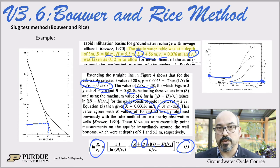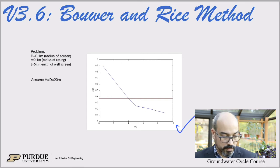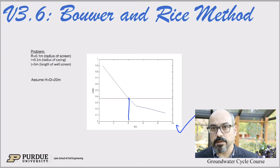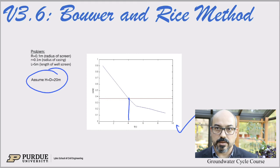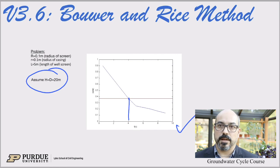And that's how you use the Boer and Rice method. It's a little bit cumbersome, but it's definitely doable. As an activity, we can redo our Vorzleff method data — the one we did with T37 last time — using the Boer and Rice method, and see that we find a very similar result. We'll assume H and D equal 20 meters for a fully penetrating well, then use the equations from the paper to find hydraulic conductivity and compare to the Vorzleff result. Thank you, and I'll see you in the next video.